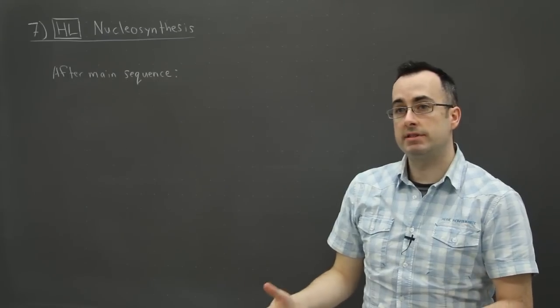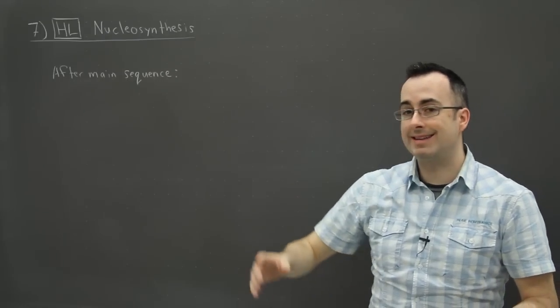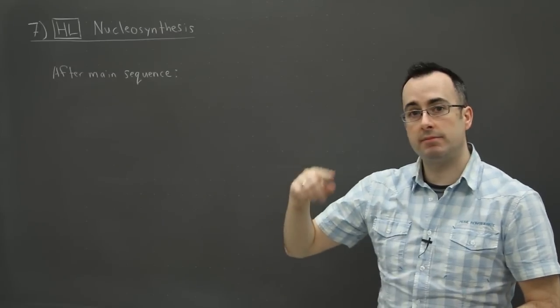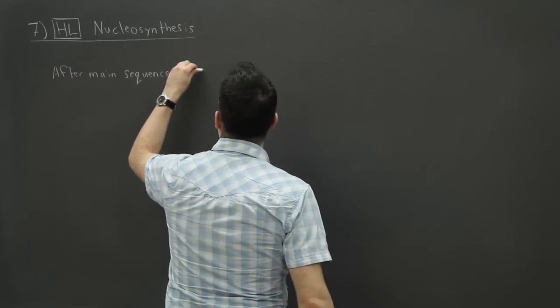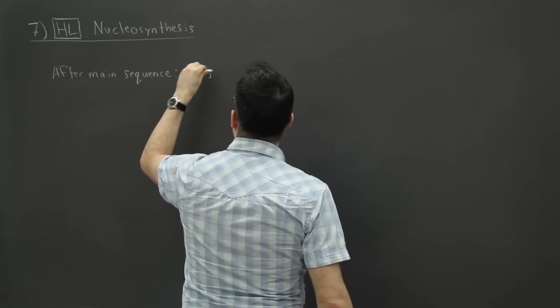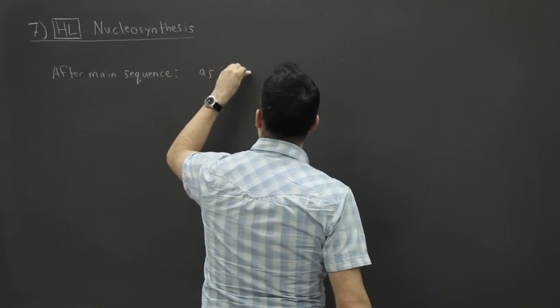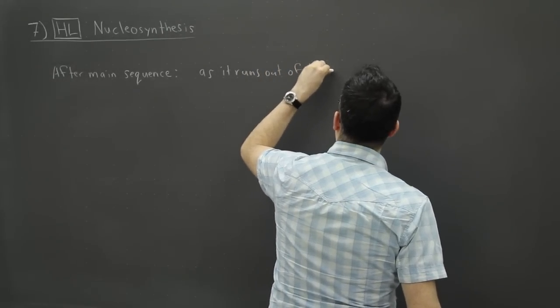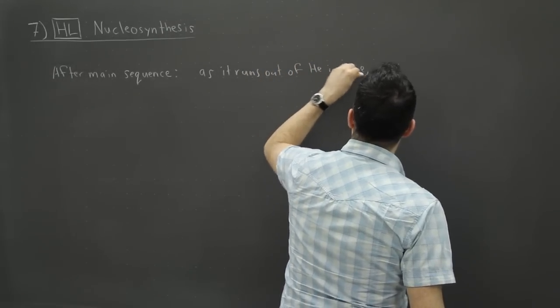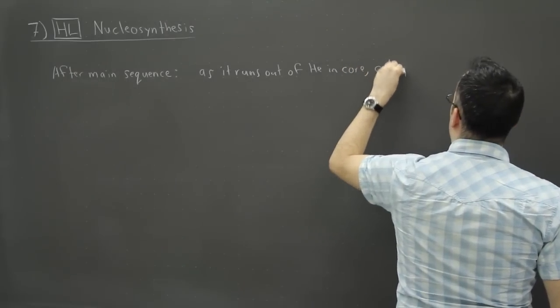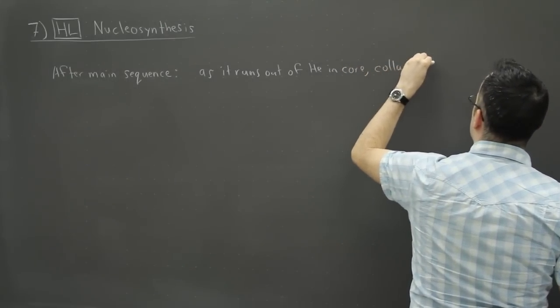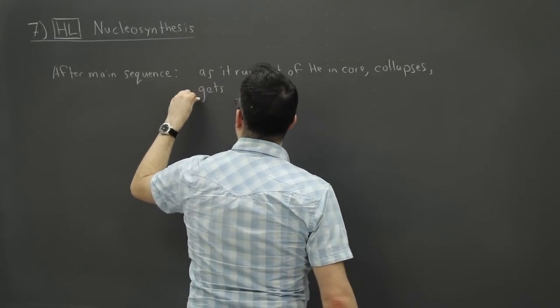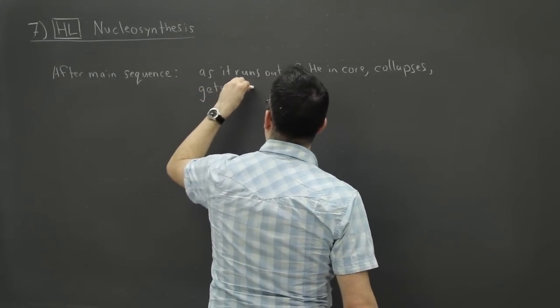Okay, so now we have a star that has left the main sequence. It's been fusing helium to heavier elements and of course then it's going to run out of helium. So as it runs out of helium in the core, it collapses. This is the core that does this. The core collapses and gets dense and hot enough to burn even heavier.